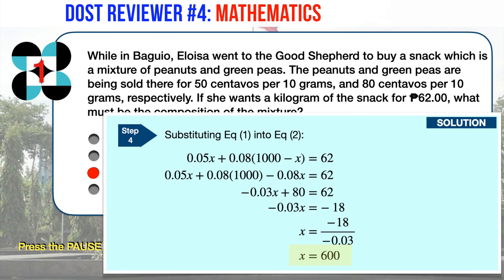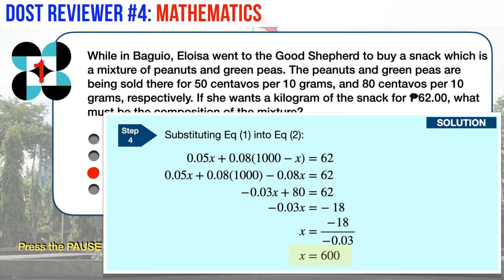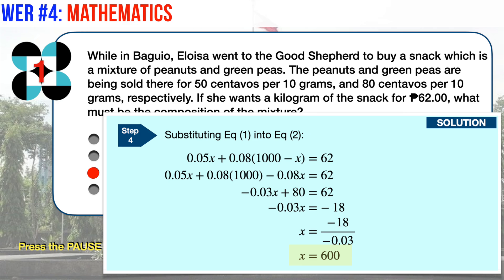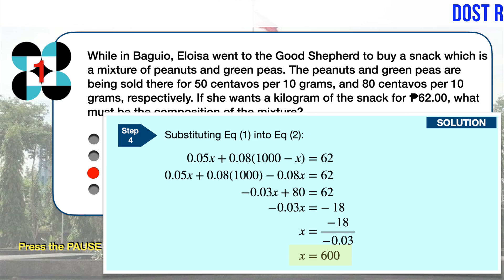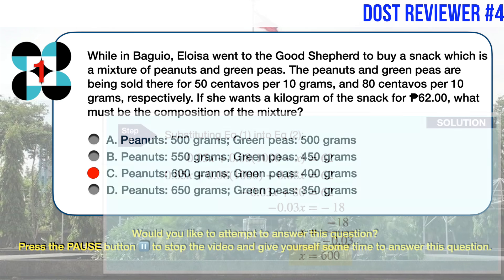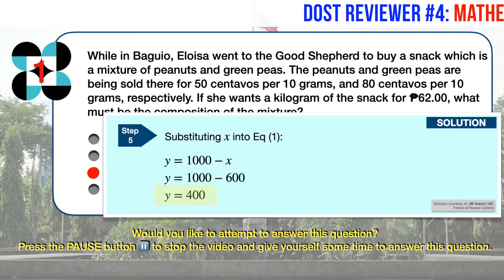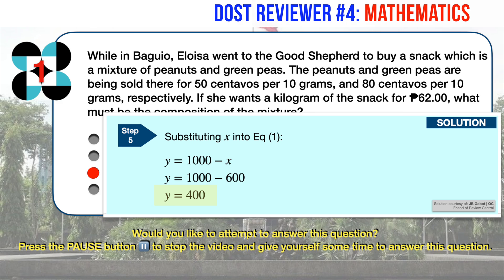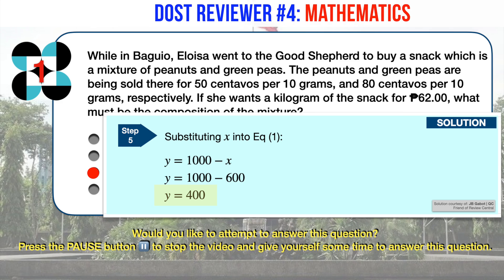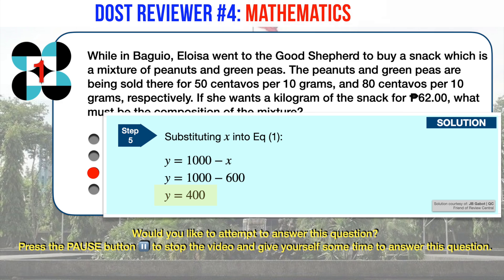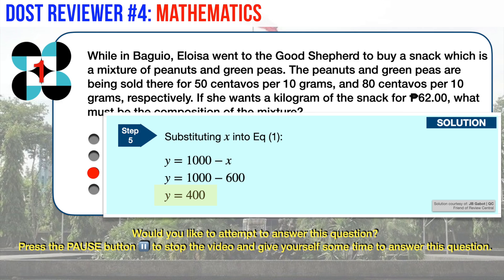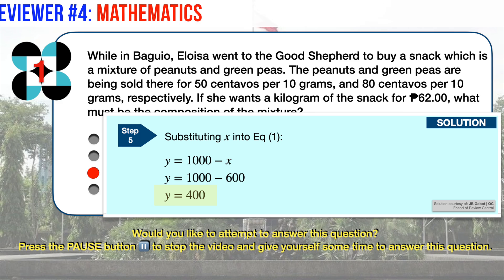Substituting equation 1 into equation 2, from the resulting equation we can solve for X and arrive at X equals 600 — that's 600 grams of peanuts. Substituting the X value into equation 1, we compute for Y and arrive at Y equals 400 — that's 400 grams of green peas. Hence, the correct answer is C.